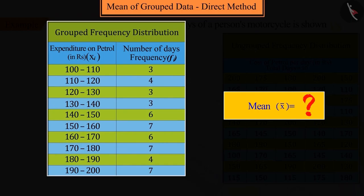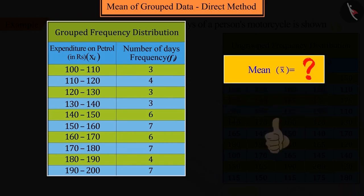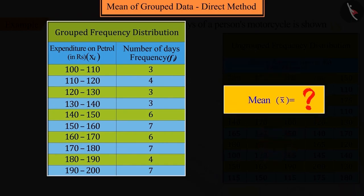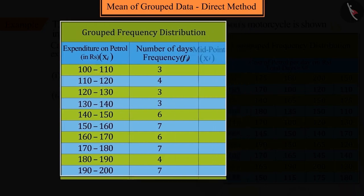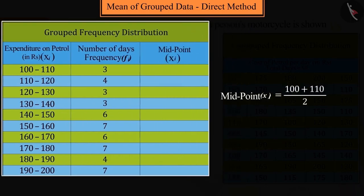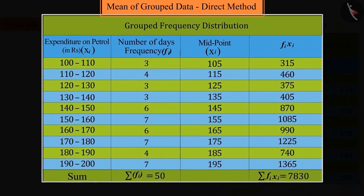Correct answer. To find the mean, find the midpoint of each class interval. Multiply them with their corresponding frequencies, find their sum, and then divide the result 7830 by the sum of their frequencies, that is 50.